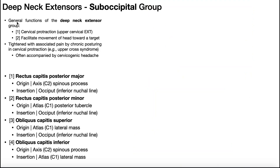The deep neck extensors are four very small muscles on the posterior side of the cervical spine: rectus capitis posterior major, rectus capitis posterior minor, obliquus capitis superior, and obliquus capitis inferior.